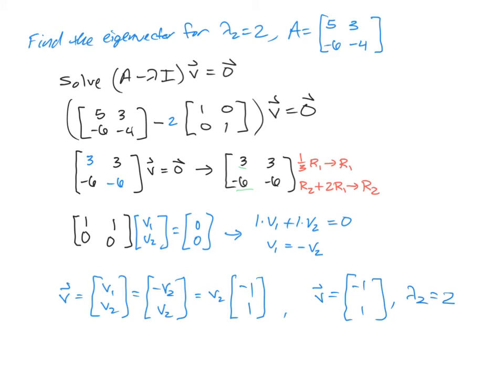All right, so now we have our two eigenvalues and we have our two eigenvectors. The next step of the problem is to build our general solution.